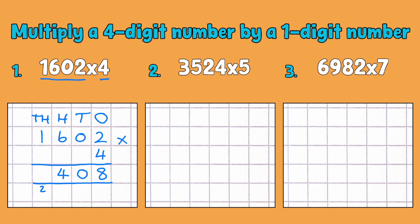And then 1 times 4 is 4. Add the 2 that I've carried over at the bottom to make 3, or 3,000. So the number that I end up with is 3,408.